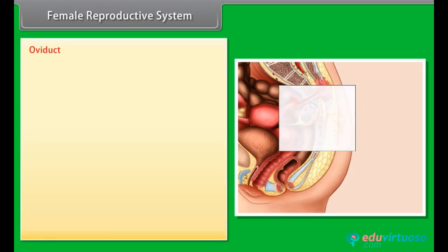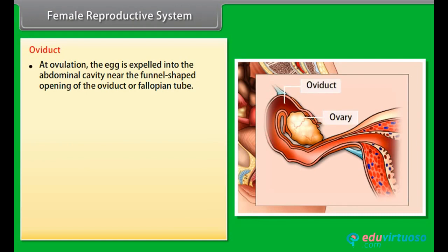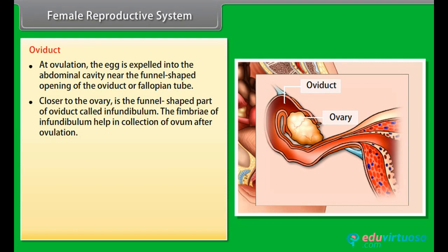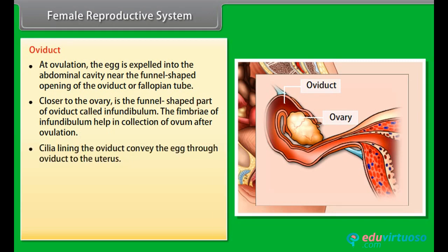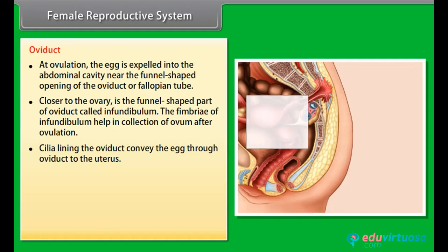At ovulation, the egg is expelled into the abdominal cavity near the funnel-shaped opening of the oviduct, or fallopian tube. Closer to the ovary is the funnel-shaped part of the oviduct called the infundibulum. The fimbriae of the infundibulum help in collection of the ovum after ovulation. Cilia lining the oviduct convey the egg through the oviduct to the uterus.